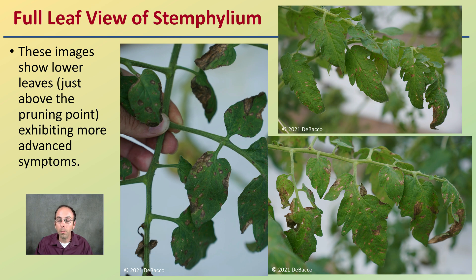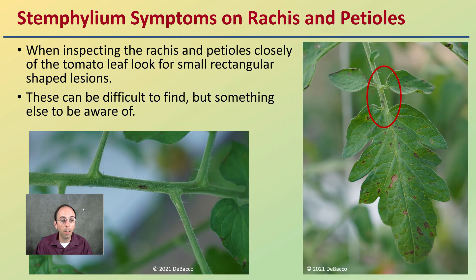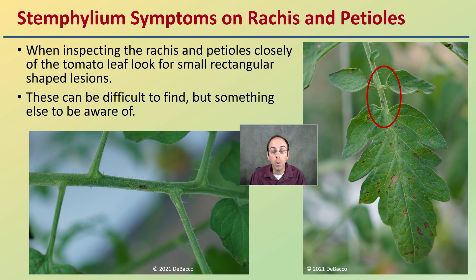In the full leaf view, the images show lower leaves just above the pruning point for this particular grower, exhibiting more advanced symptoms. Higher up on the plant, you can see earlier signs — which is when you want to catch it. Looking at the rachis or petioles in the detailed view, when inspecting these areas, closely look for a small rectangular lesion. These can be difficult to find, but they're something to be aware of when looking at the leaf during field diagnosis.